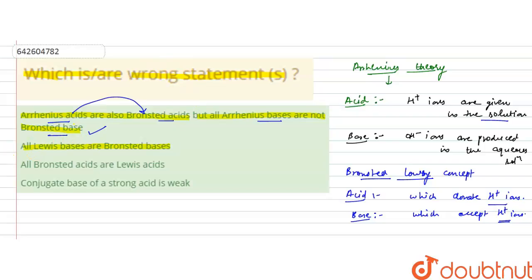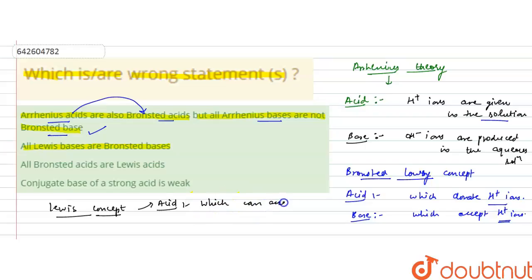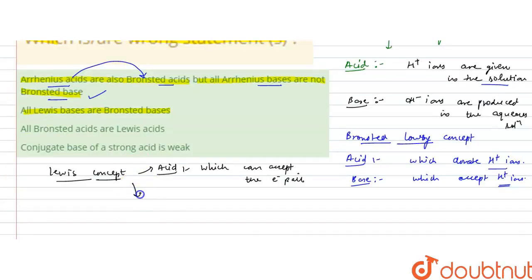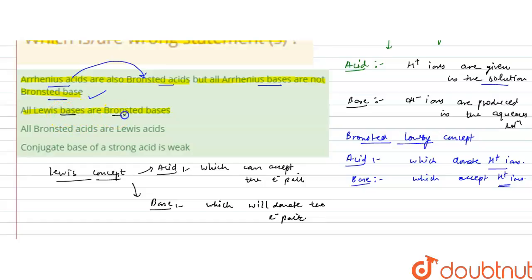The second statement is: all Lewis bases are Bronsted bases. According to Lewis concept, an acid is a molecule which can accept an electron pair for the formation of a coordinate bond, and a Lewis base is a species which donates an electron pair. So this statement says all Lewis bases are Bronsted bases.